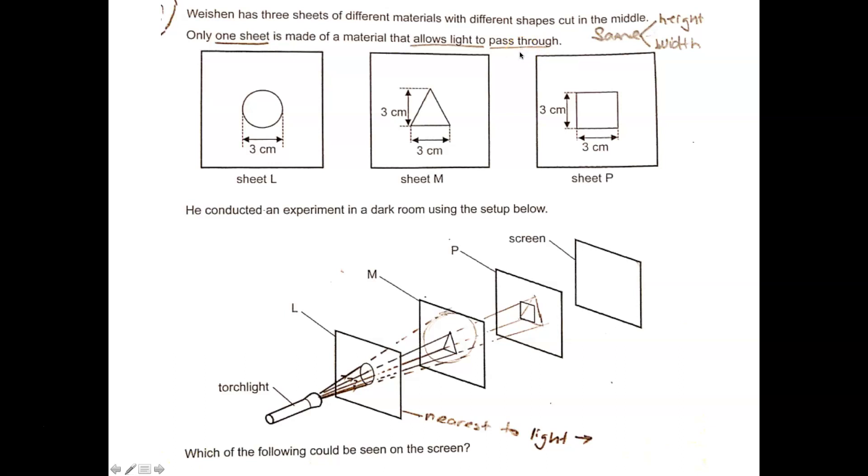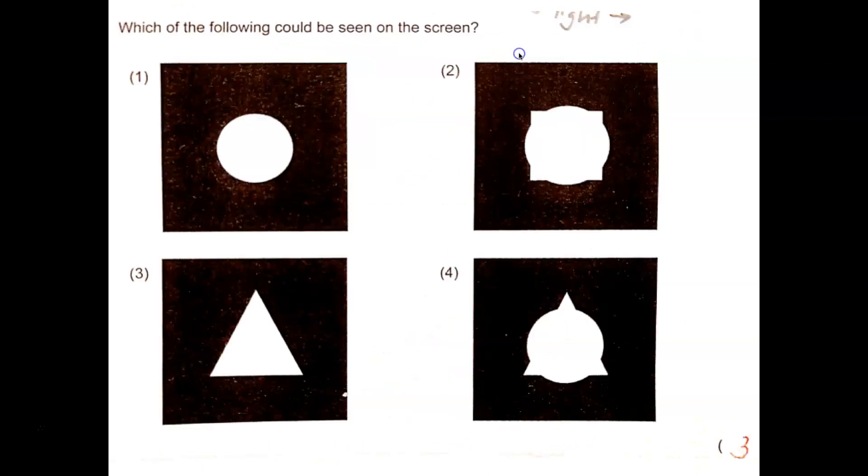Now there's one more tricky condition here, which is only one of this material is allowed light to pass through. Which means it's transparent. And in science questions, that means that it shouldn't cast a shadow. Although in real life you have tried before using your glasses or plastic sheet, transparent plastic sheet, it actually casts a faint shadow. But in this case here, we will just take it as if it allows light to pass through, that means that it will not cast a shadow. So which of this following could be the answer?